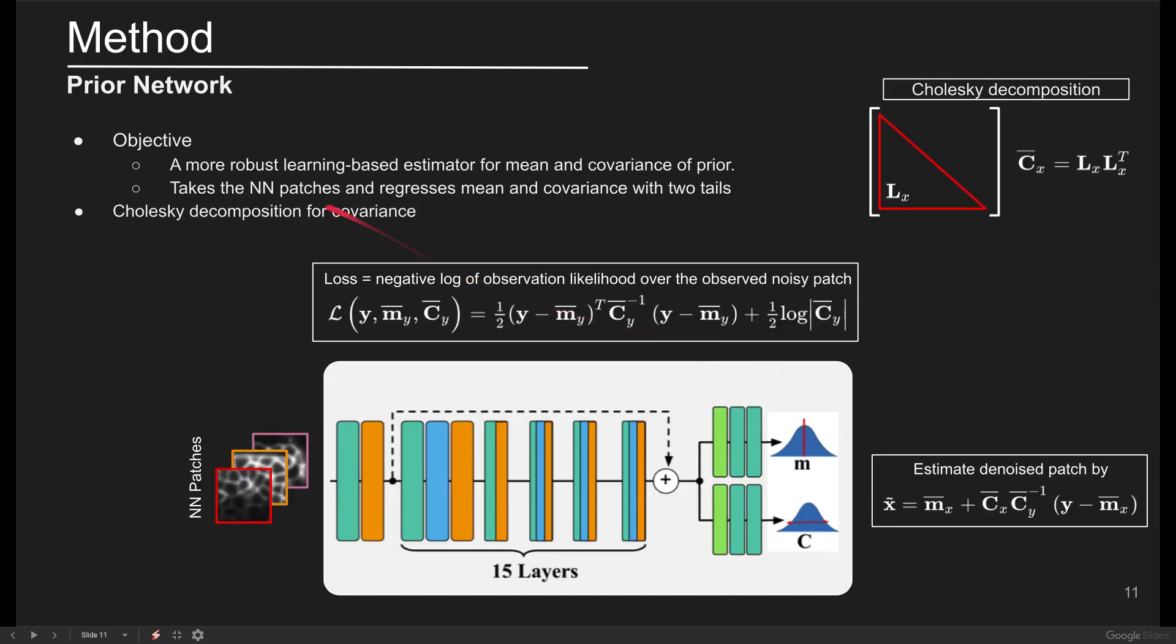The objective of the prior network is to provide a more robust learning based estimator for the mean and covariance of the prior distribution. We borrowed a simple architecture from the DNCNN model consisting of convolutional Li-Curello and BatchNorm layers with two tails at the end to learn the mapping from nearest neighbor patches to MX and CX.